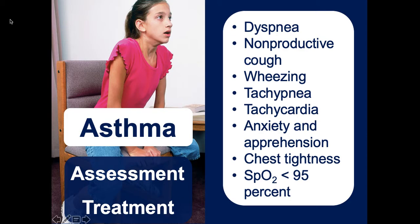Asthma patients will be dyspneic, may have a dry cough (seen primarily in younger children), and will have wheezing from bronchoconstriction. They'll be tachypneic, tachycardic over 100 bpm, and anxious — partly from hypoxia and partly from the distress of not being able to breathe. We should try to assist them with their inhalers, because anxiety may have caused them to use the inhaler incorrectly before our arrival. If we coach them through it correctly, we may break the attack.